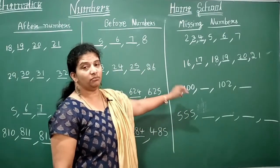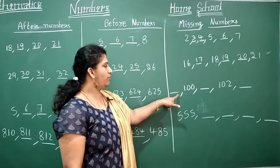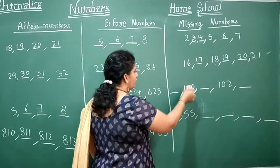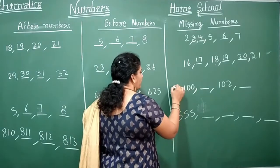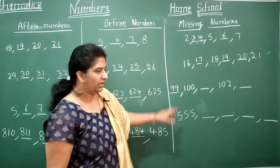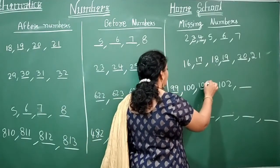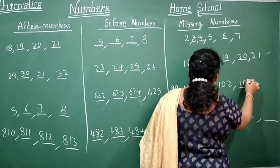Here 100 before number. See here before one dash. So before number is missing. What is that before number? 100 backward? It will be 99. 99, 100, 101, 102, 103.